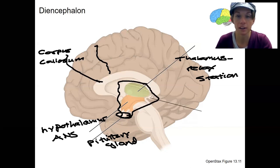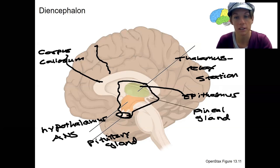The last part that's highlighted here is part of the epithalamus. So the epithalamus is above the thalamus and the part that is highlighted here is the pineal gland. The pineal gland is another endocrine gland. So it releases hormone. It releases melatonin to regulate your sleep-wake cycles.